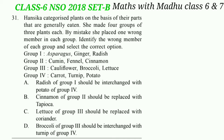We eat stems of asparagus, ginger and potato, and roots of carrot, turnip and radish. So the correct answer will be option A. Radish of group 1 should be interchanged with potato of group 4.